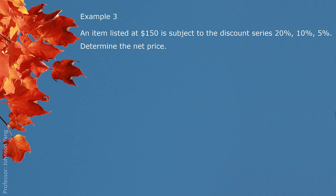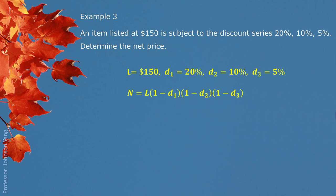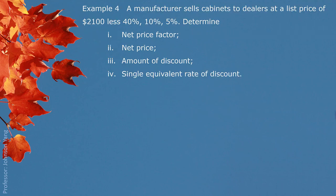Example 3. An item listed at $150 is subject to the discount series 20%, 10%, 5%. Determine the net price. We have the rate of the series discount and the listed price. We can simply put them into the formula and get the calculation done, and we come out with a net price of $102.60.